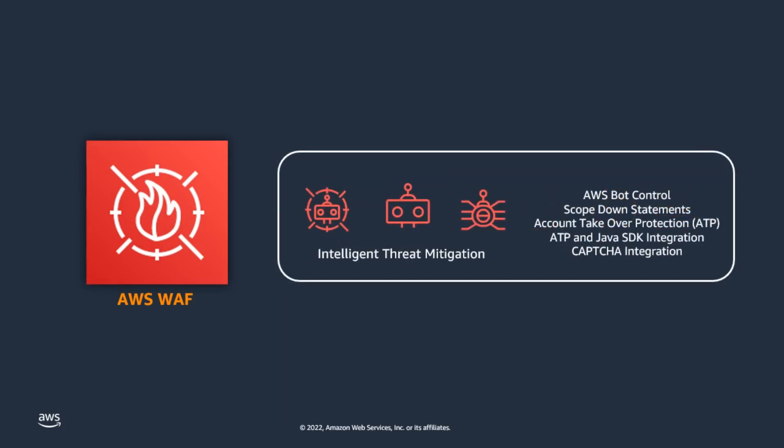You can also use AWS WAF's intelligent threat mitigation features like bot control and account takeover protection. Bot control checks various header fields and request properties against known bot signatures to detect and categorize automated bots such as crawlers, scanners, and scrapers.